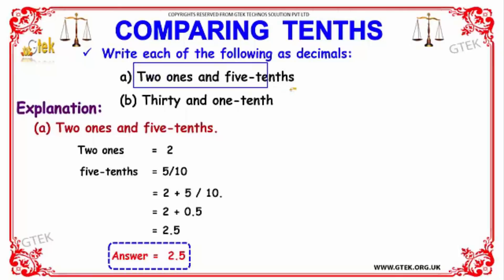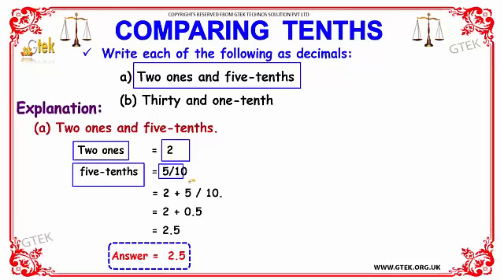For the first term — two ones and five tenths — we use the addition operator: 2 plus five tenths, which is 5/10. Five divided by 10 is represented as 0.5. So adding 2 + 0.5 gives us an answer of 2.5.